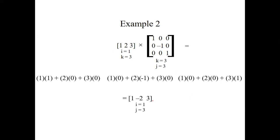Our product matrix is a 1×3 matrix — it has one row and three columns. This is exactly what we expected, because i=1 and j=3.